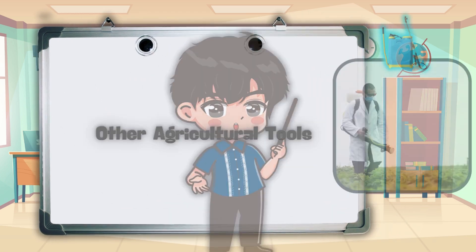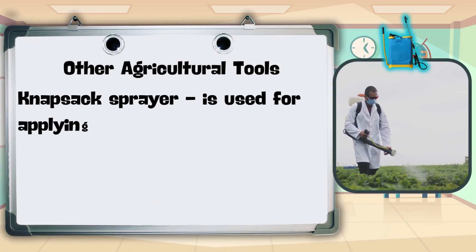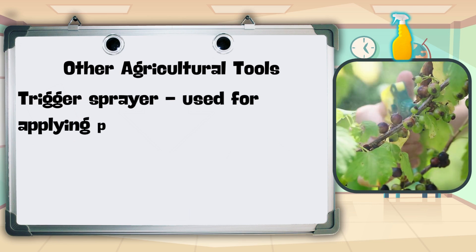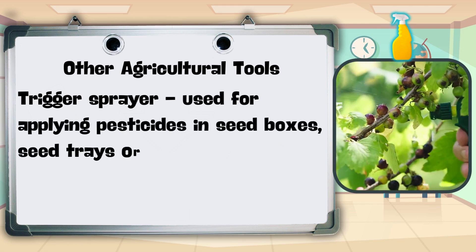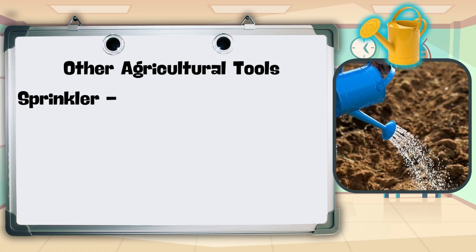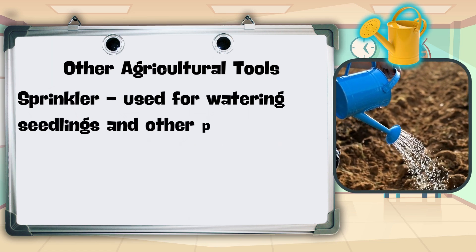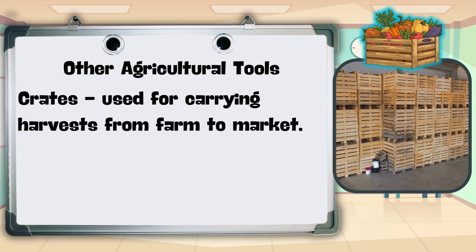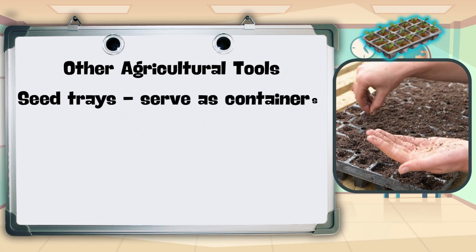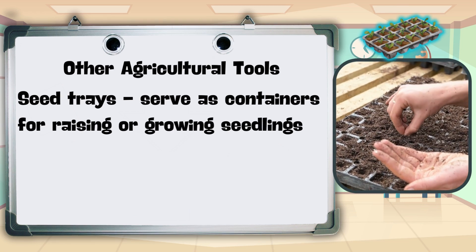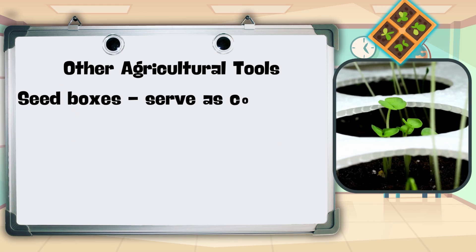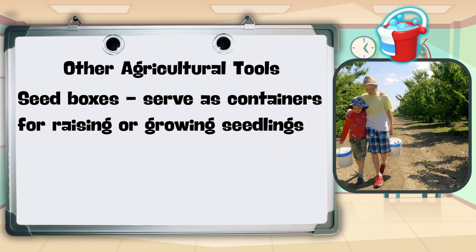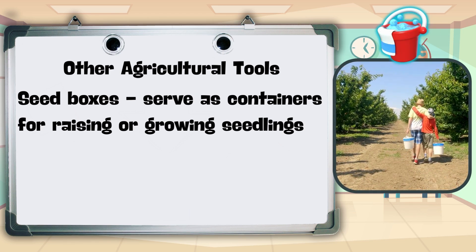For other agricultural tools: knapsack sprayer — used for applying pesticides and foliar fertilizers; trigger sprayer — used for applying pesticides in seed boxes, seed trays, or seed beds; sprinkler — used for watering seedlings and other plants; crates — used for carrying harvests from farm to market; seed trays — serve as containers for raising or growing seedlings; seed boxes — like seed trays, serve as containers for raising or growing seedlings; pails — used for hauling water, manure, and fertilizers.